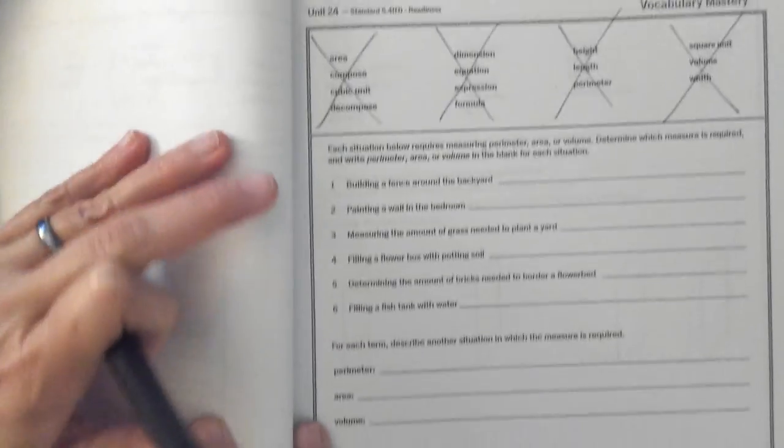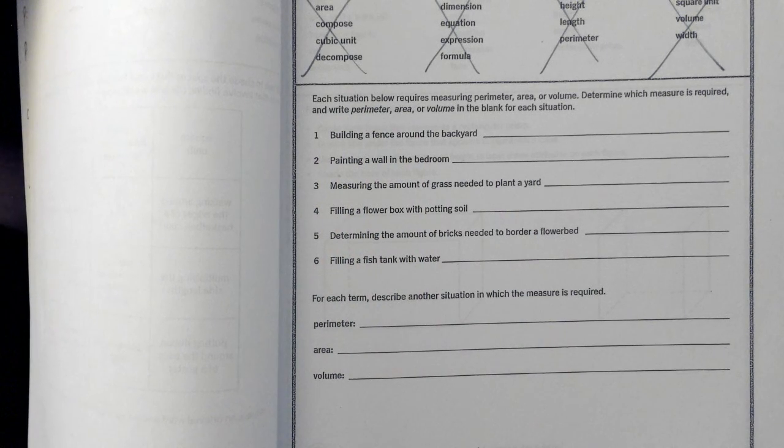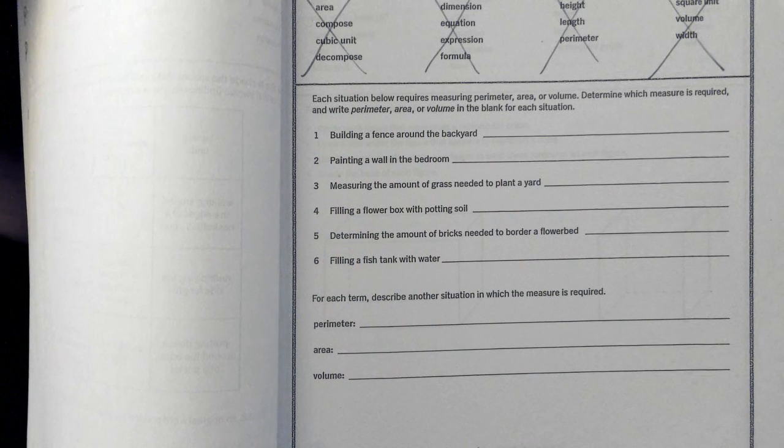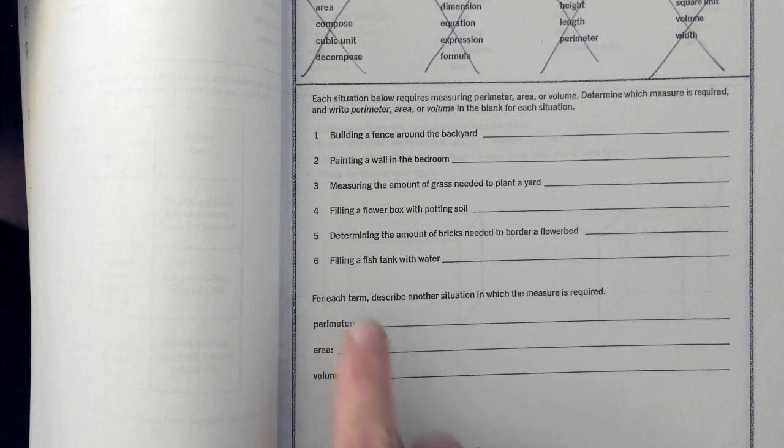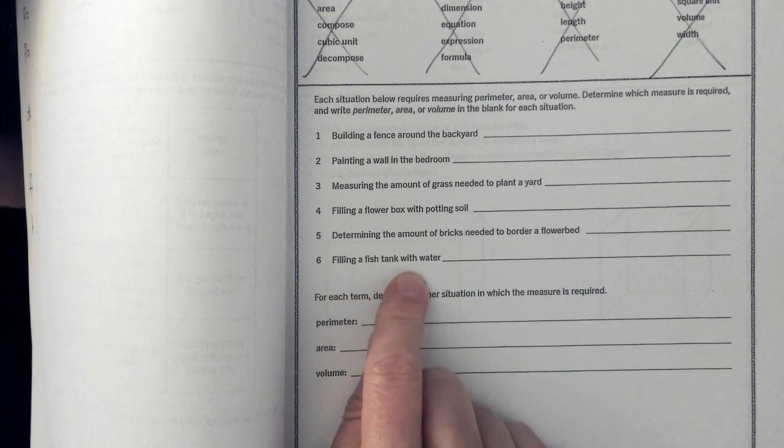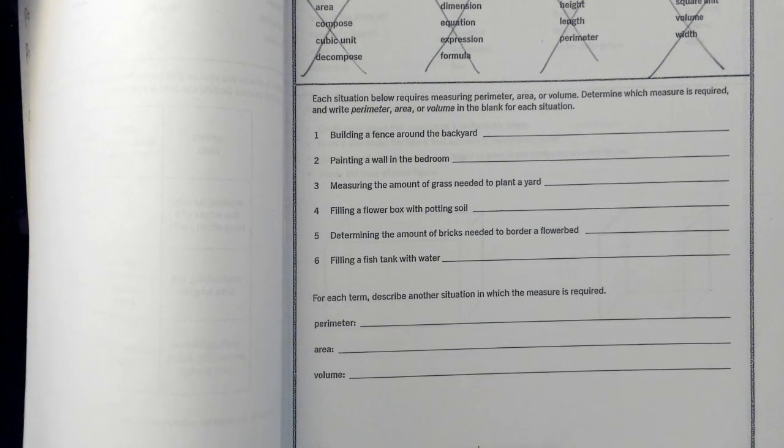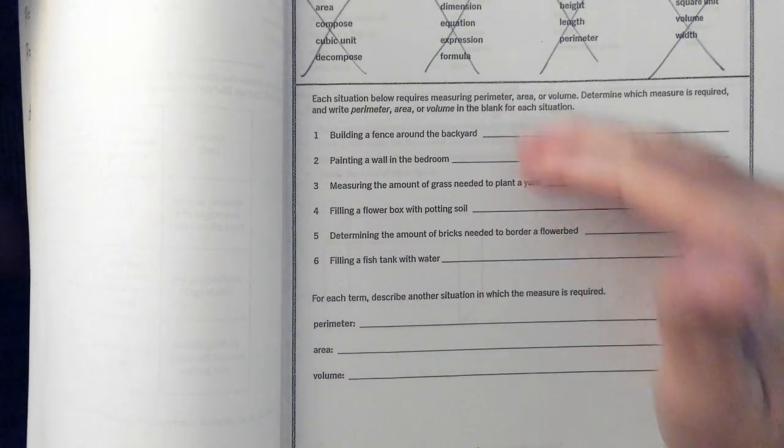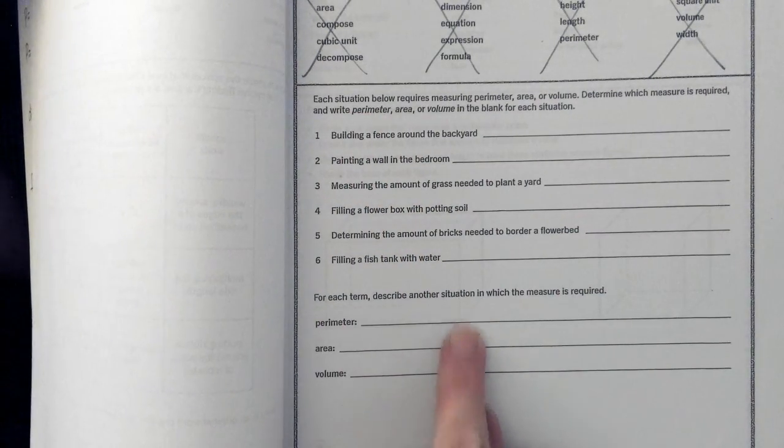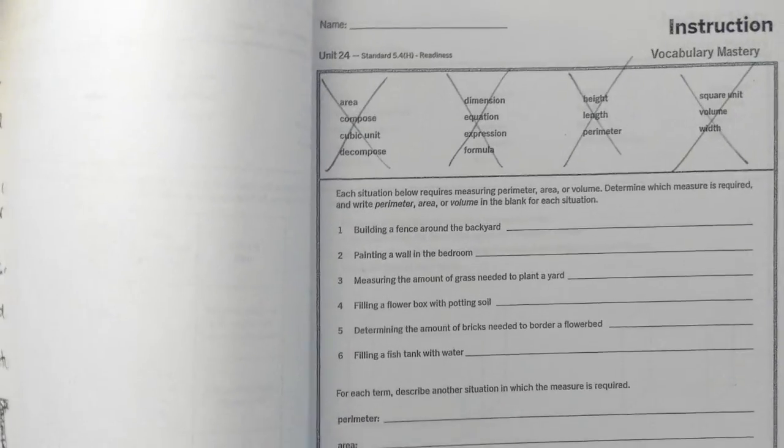And then on the following page, each situation below requires measuring perimeter, area, or volume. And remember that volume is like liquid. So I'm just going to tell you, like number six, filling a fish tank with water is volume. So if you're filling something up, you're doing volume. So you're going to write perimeter, area, or volume on each of these. And then for each term, describe another situation in which the measure is required, and then a thinking question at the bottom.